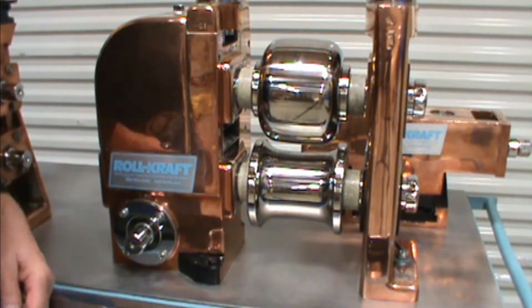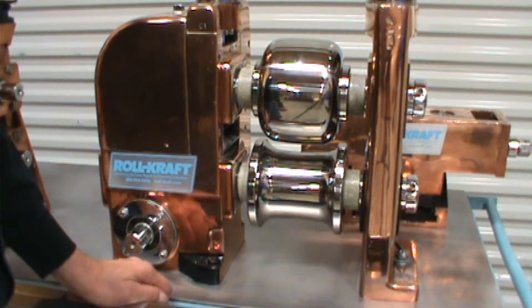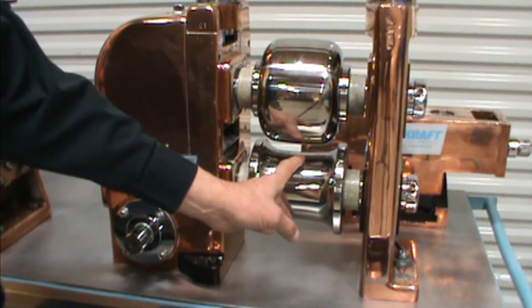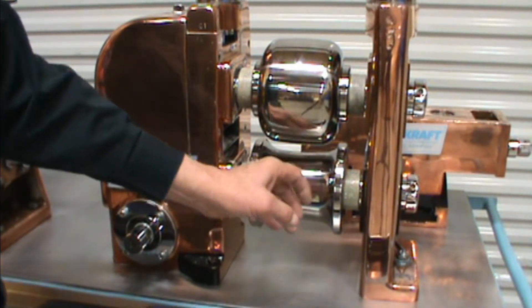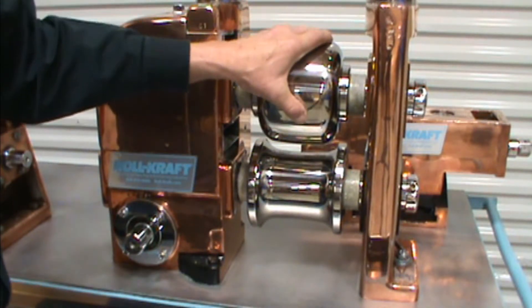To see what our gear ratio is on the tooling, if we have prints, we can simply take the smaller throat diameter of the bottom roll and divide it into the larger diameter of the top roll and that will give us our ratio.